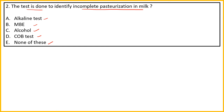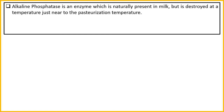The right answer over here is option A, the Alkaline test. The Alkaline test is conducted for incomplete pasteurization. Alkaline phosphatase is basically an enzyme which is naturally present in milk. But when you apply pasteurization temperature — heating — the alkaline phosphatase enzyme is destroyed.